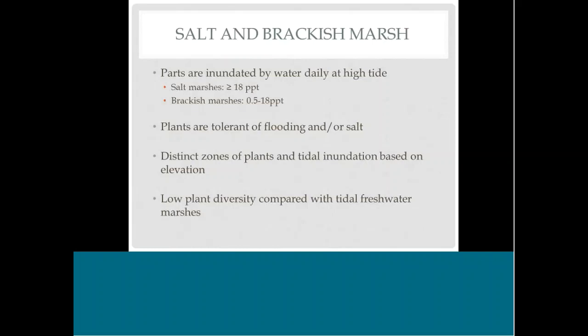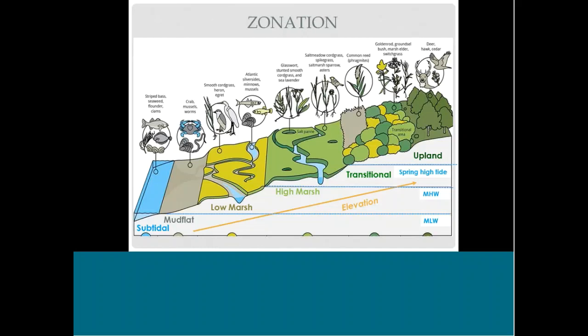Salt and brackish marshes tend to have low plant diversity compared with tidal freshwater marshes because saltwater creates a much harsher environment. Habitat zonation occurs on an elevation gradient — the lower elevation areas on the left of the diagram transition to uplands at higher elevation on the right. Different zones within the marsh are inundated at different frequencies, which is why you see different plants and animals in each zone. The diagram also denotes where mean low water, mean high water, and higher spring or extreme storm tides typically hit within those zones.